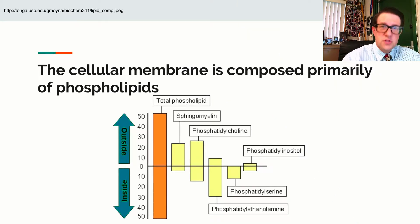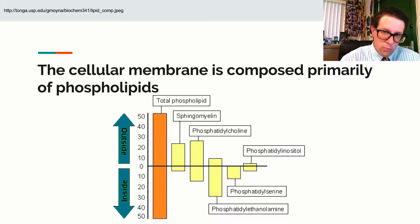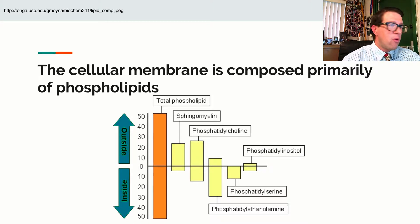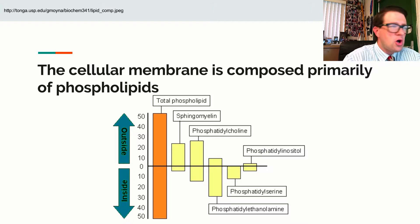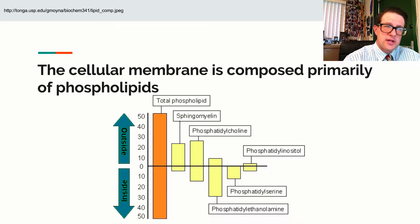Let's start simple with the phospholipid bilayer — the membrane, the outer portion, the cell membrane or the plasma membrane. What we notice is it's composed of phospholipids, but those phospholipids aren't necessarily always the same. There are lots of different types of phospholipids that compose this membrane.